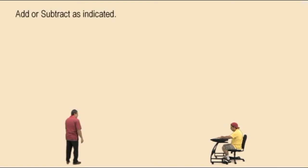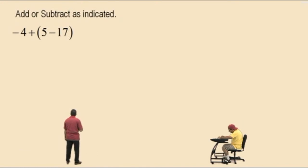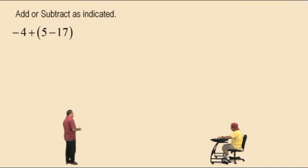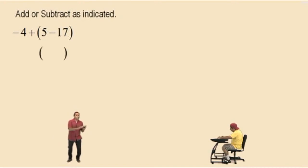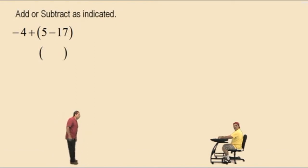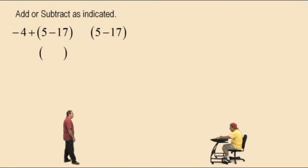Let's do some addition and subtraction problems: negative 4 plus 5 subtract 17. Let's do this without a calculator. We've got to follow the order of operations — 5 subtract 17. We should know 5 subtract 17 is a negative number, so we're going to use some kung fu here.